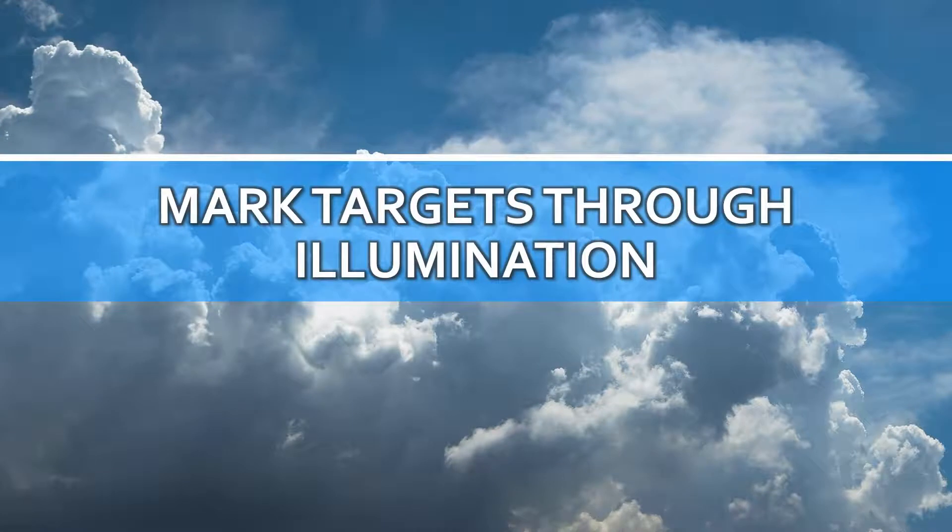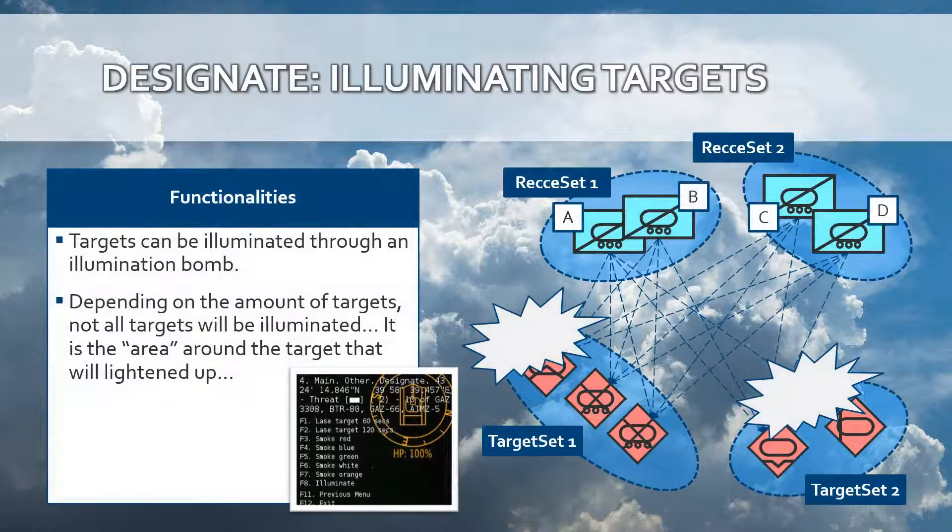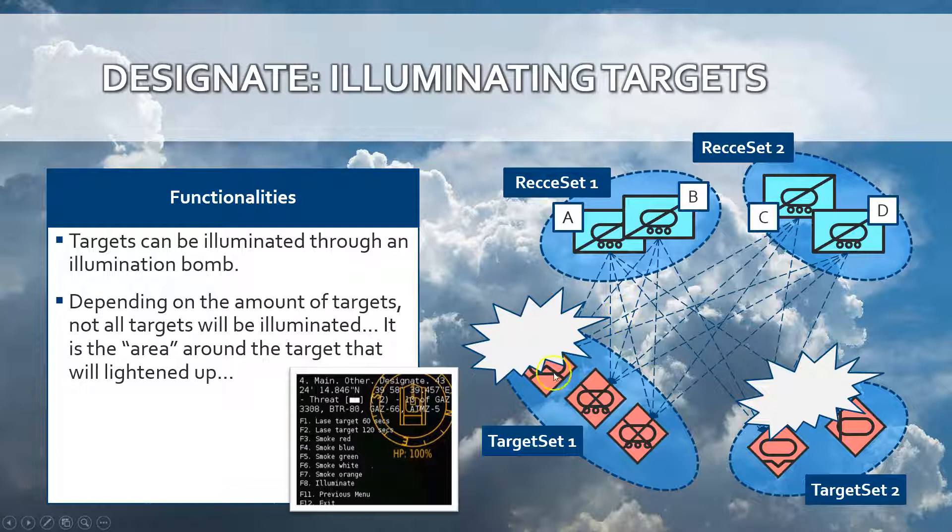Another way to mark targets is through illumination. In this way, the area around the target will be illuminated, and it becomes pretty handy during the night. The illumination bomb will not burn permanently but will burn as long and as high as the illumination bomb was fired from.